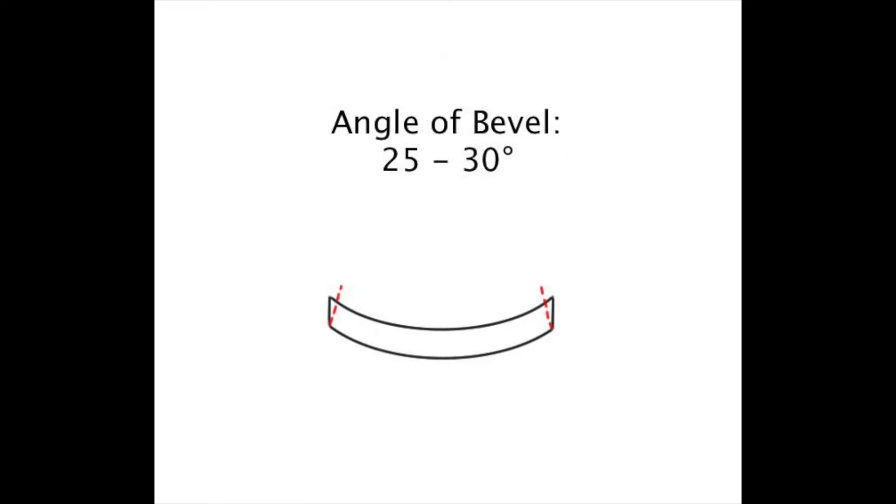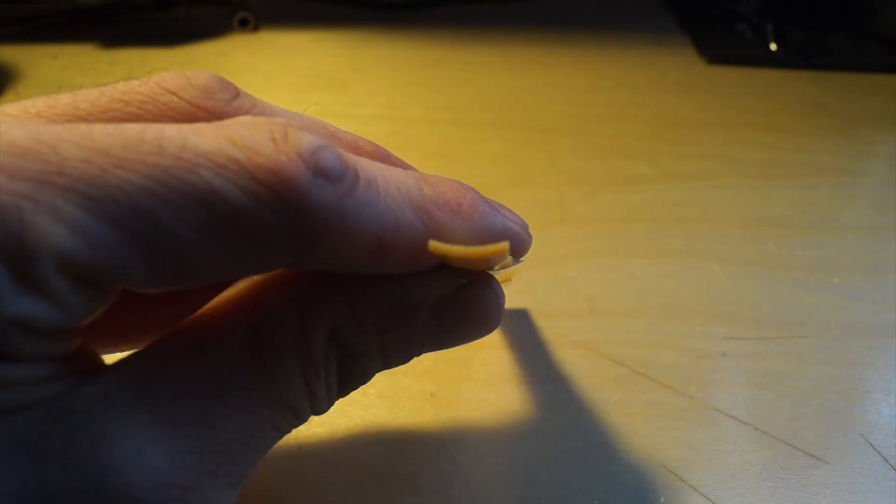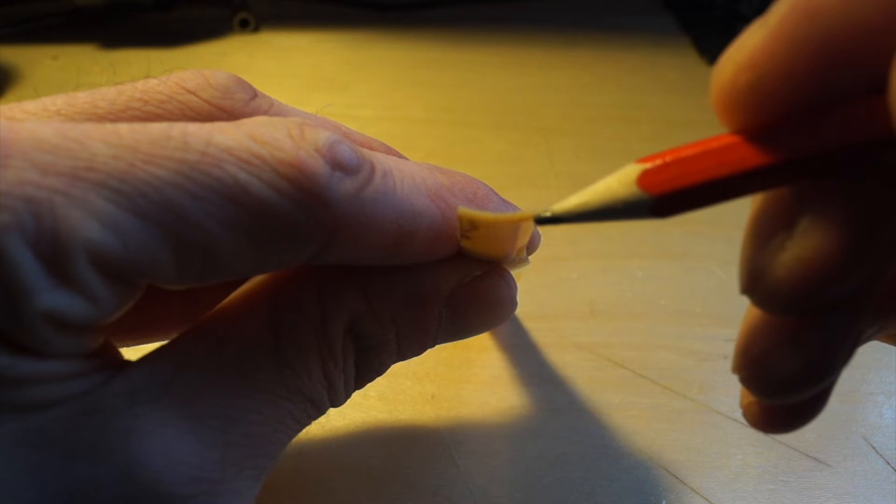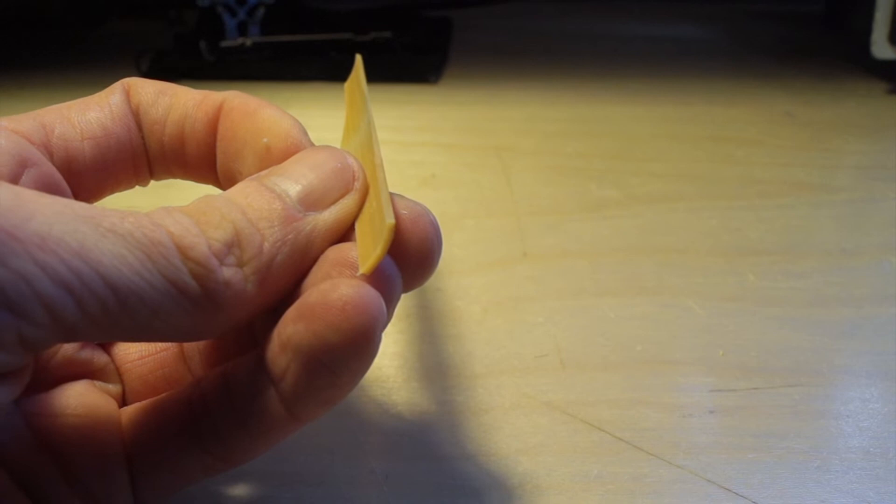So the ideal angle that we want to bevel these edges is about 25 to 30 degrees. It's really a very small amount that we actually want to take off and we want to avoid removing any of the outer edge where the bark is.